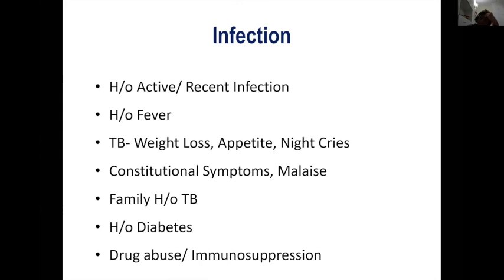In case of infection, ask about active or recent infection and fever. Especially in a country where TB is endemic, ask about weight loss, appetite loss, night sweats, constitutional symptoms and malaise, any family history of TB, and also about diabetes, drug abuse, and immunosuppression.